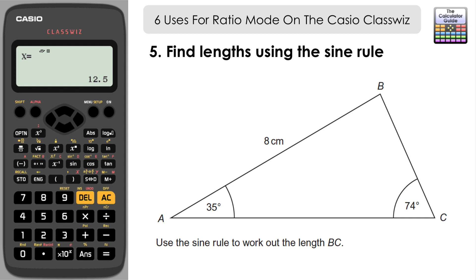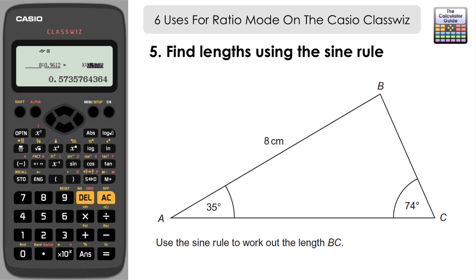The fifth use is working out side lengths using the sine rule, which is essentially a ratio. We need to find the length BC. The known pair is side 8 and its opposite angle, sin(74°), on the left. The unknown BC is paired with sin(35°) on the right-hand side. Input these values, press equals twice to confirm, and the unknown side length BC is 4.77.